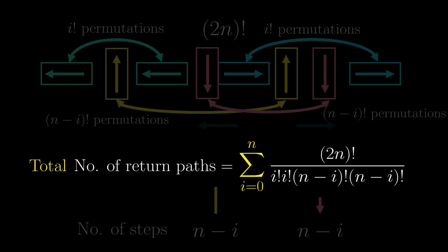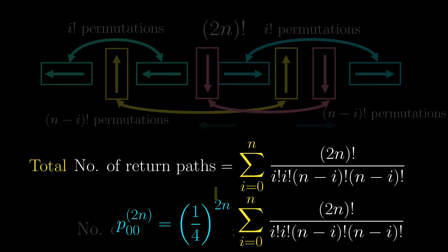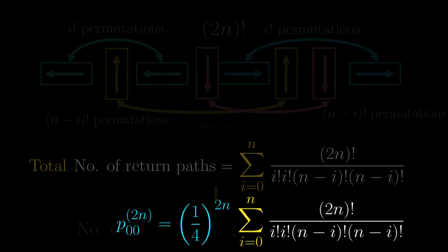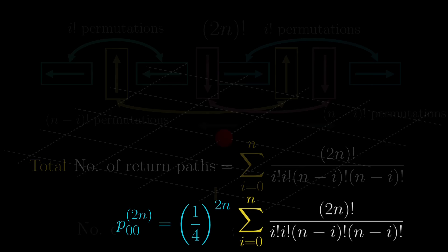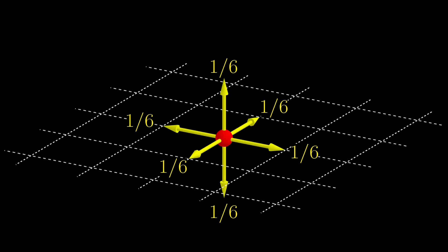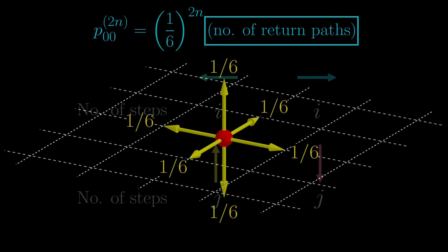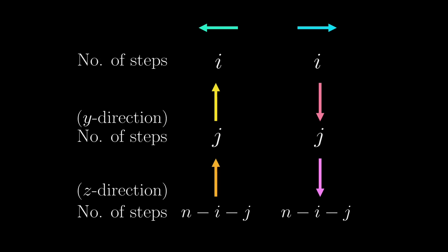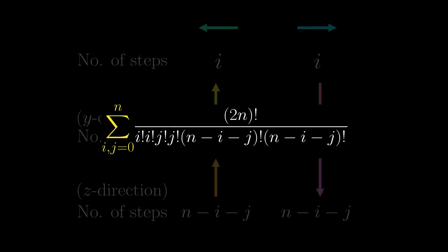Finally, this 2n step return probability is 1 quarter to the 2n times the total number of return paths. That's just the case in 2D. What about the 3D random walk? The only difference is that transition probabilities are all 1 sixth, and there is one more pair of directions to consider. The 2n step probabilities would be replacing 1 quarter by 1 sixth, and for the number of return paths, we use a similar method, with the only difference being there are 3 pairs of directions now. So similarly, for fixed values of i and j, this is the number of return paths, and adding all these for i and j, ranging from 0 to n, will give the total number of return paths. And finally, for the 2n step return probability, we simply multiply by 1 sixth to the 2n.